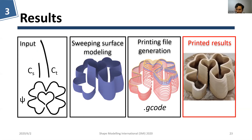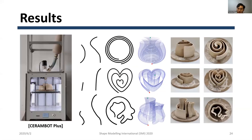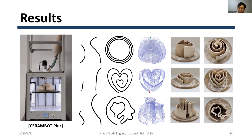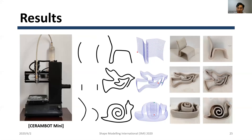Finally, here are some printed results. We invited 10 undergraduate students to perform surface design. It takes 2 to 10 minutes for them to finish designing CS, CT, and phi. We picked some samples from the user-created surfaces and fabricated them with our two desktop 3D printers. The screen shows three printing results from the first 3D printer, and another three printing results from the second 3D printer.